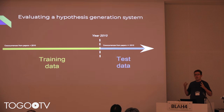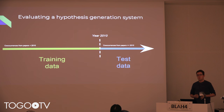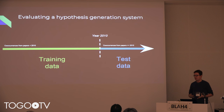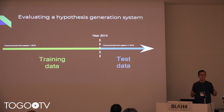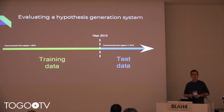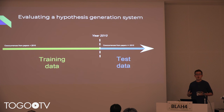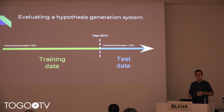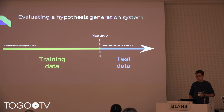If you have a hypothesis generation system, the way you generally evaluate these things — the best approach we've come up with so far — is to take all the co-occurrences in publications up to a certain date, say 2010 as an arbitrary cutoff, use them to train your system, and then see whether you can predict co-occurrences that will appear after that date, comparing them to the novel ones that actually do appear. We've done this and tested out a bunch of different systems for co-occurrence-based hypothesis generation.